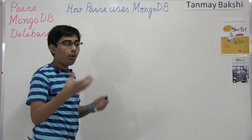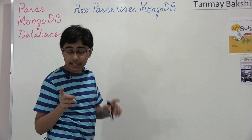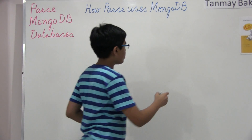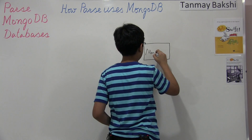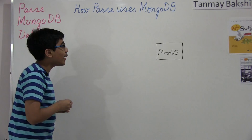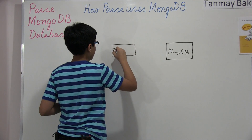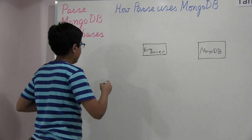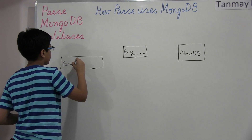It all begins with the Parse server itself. There are actually two pieces of software that Parse has made available to the public, and I don't want you to get confused between these because they are two really distinct types of software. First of all, the Parse dashboard, and the Parse server. So we've got a MongoDB backend — this is what's actually storing our data. And apart from MongoDB, under Parse we've got two categories: the Parse server and the Parse dashboard.